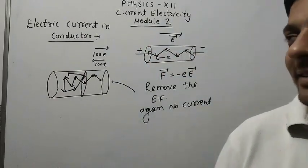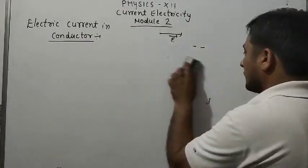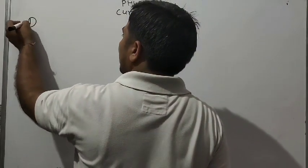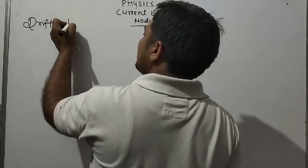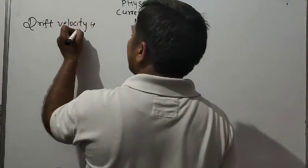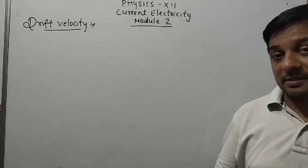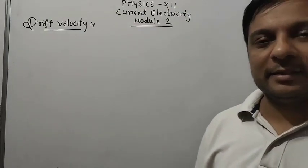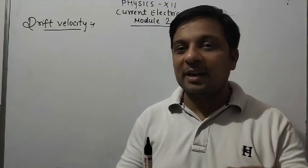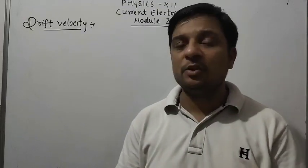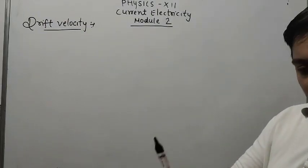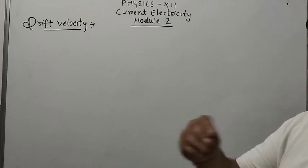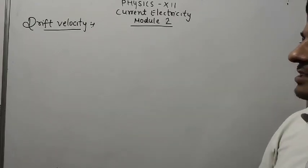This brings us to a very important topic: drift velocity. When an external electric field is applied in a conductor, electrons are accelerated in the opposite direction of the electric field. They strike ions and come to rest, then are accelerated again. The velocity with which they are drifted is called drift velocity.